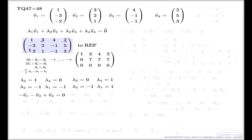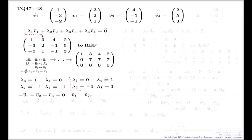Double-check: 1·1 + (-1)·3 + 0·4 + 1·2 = 0; 1·(-3) + (-1)·2 + 0·(-1) + 1·5 = 0; 1·(-2) + (-1)·1 + 0·(-1) + 1·3 = 0. It all works. So another linear combination that vanishes is: v1 - v2 + v4 = 0.